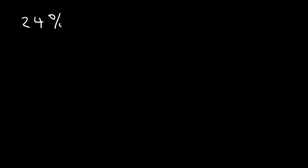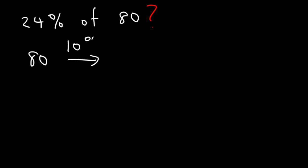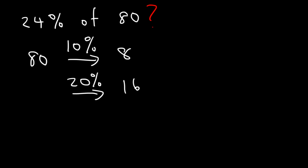Now let's move on to a more challenging example: what is 24% of 80? First, 10% of 80 is 8, and 20% of 80 is 8 times 2, which is 16. Now we need to get to 24%, so it's helpful to find the value of 1%. If 10% is 8, then 1% is 0.8 — just move the decimal one unit to the left.